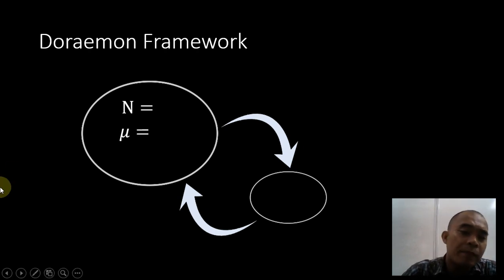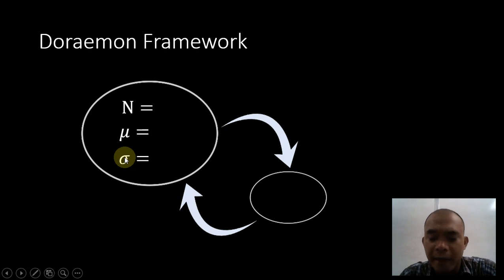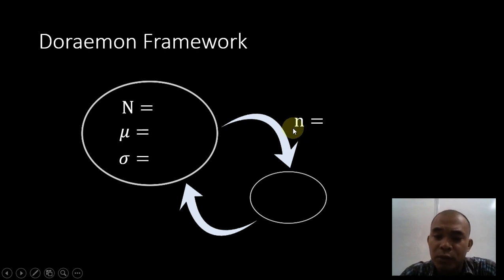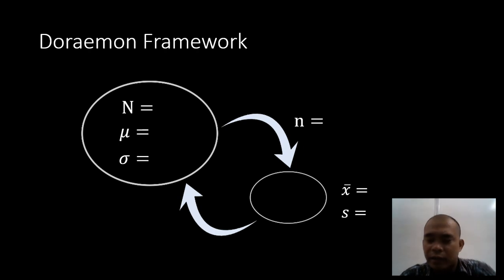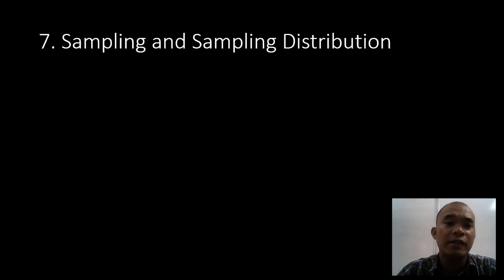Mu here represents the population mean, and sigma represents the population standard deviation. We use the small letter n to represent the sample size. X-bar represents the sample mean. And in a later chapter, we will also discuss the sample standard deviation. That's the Doraemon framework.